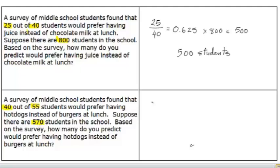You go through the same process. You find the ratio. 40 out of 55. In this case, it gives you 0.7272 and that repeats itself. So what you do is, you multiply that decimal by 570 and it will give you your answer.